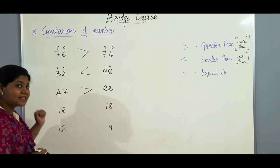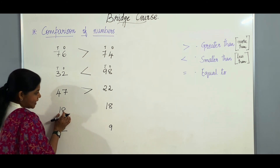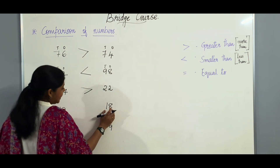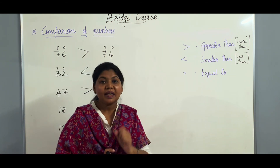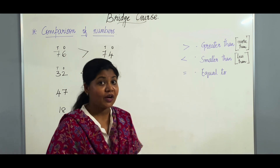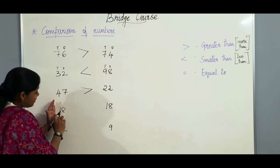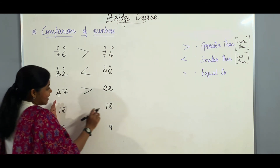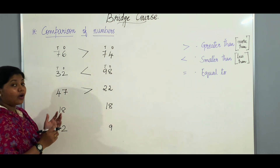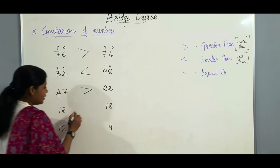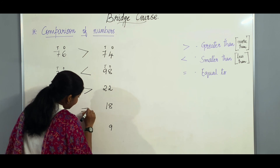Let us go to the next example. Here we have the number 18 and the number 18. When both the numbers are same, we write equal to. Because this number has 1 and 8, and here we also have 1 and 8. So when both numbers are equal, we put the equal to sign. The equal to sign is like 2 sleeping lions.